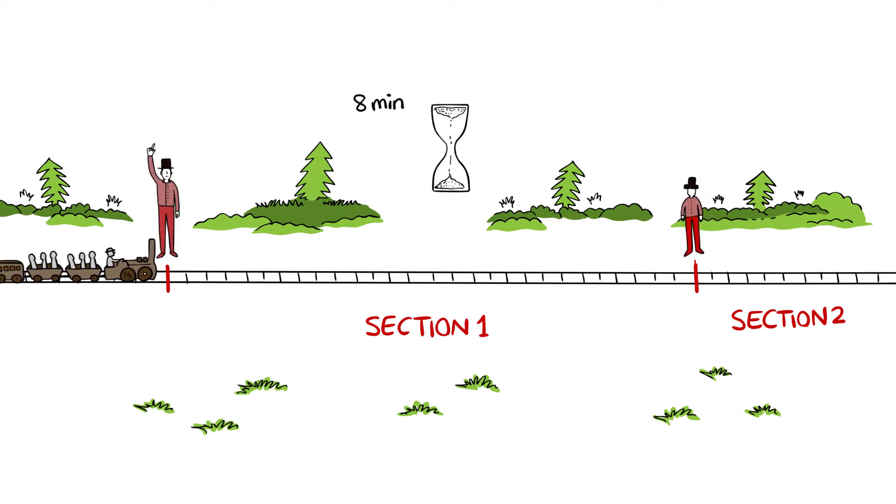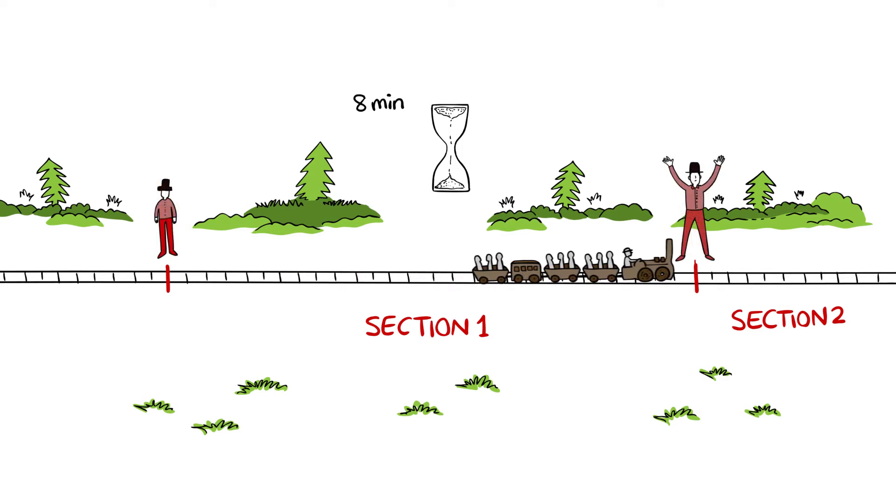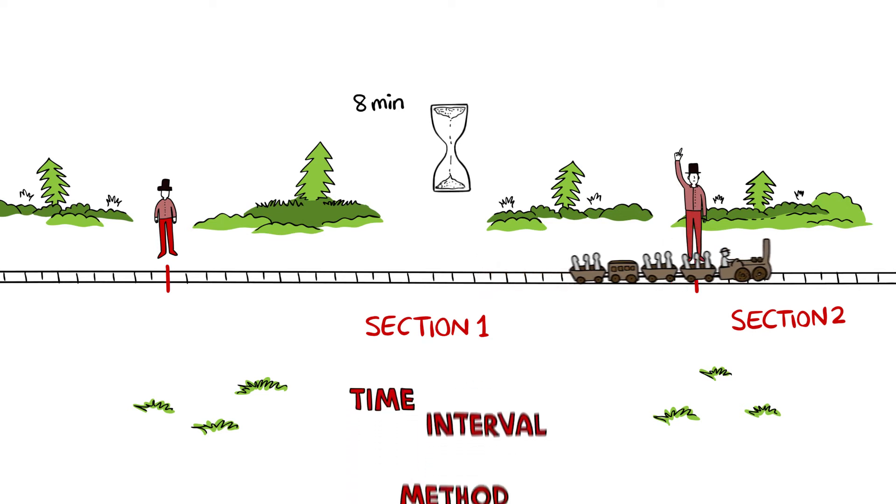Once the full 8 minutes have elapsed, the policeman will permit the second train to enter the track section under caution by giving the caution signal. This approach maintained a consistent time separation between trains assuming that after 8 minutes, the first train has cleared the track section. This signaling approach came to be called the time interval method.